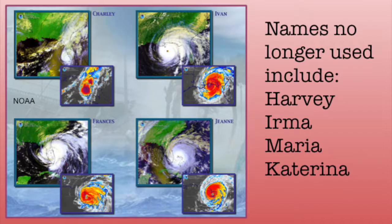Hurricanes are named following a procedure set by the World Meteorological Organization. The names for hurricanes in the Atlantic are rotated every six years. For storms that are extremely deadly or costly, names are not repeated. Examples of names no longer used include Harvey, Irma, Maria, and Katrina.